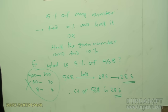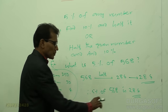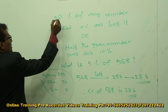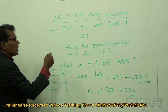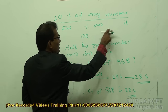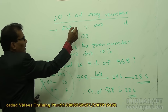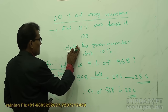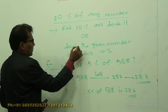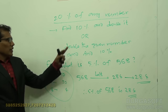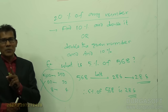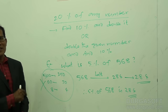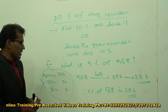Next: 20% of any number. To get 20%, either find 10% and double it, or double the given number and find 10%. If the number ends with 0, use the first technique. If the number does not end with 0, use the second technique.